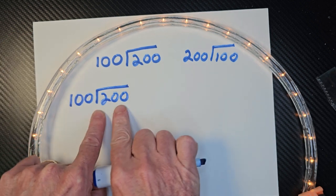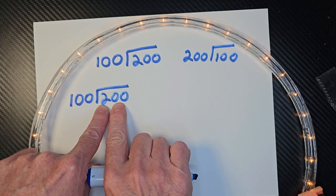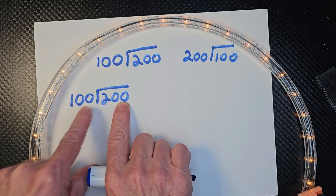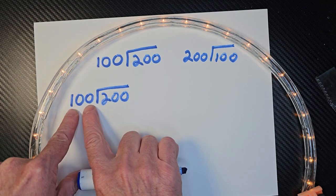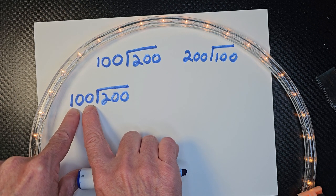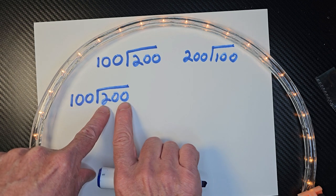When we look at this problem, this is like I have 200 apples. That would be a lot of apples. And then I want to divide those into 100 groups. So how many times can I put 100 into 200?